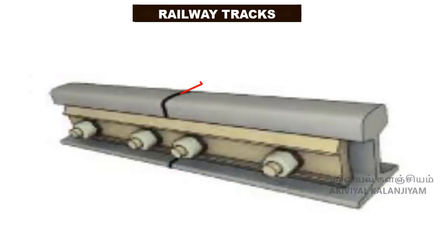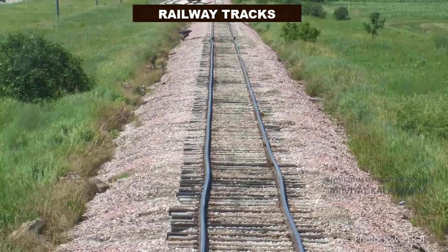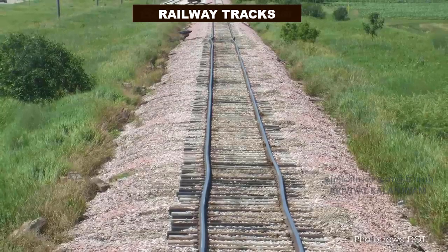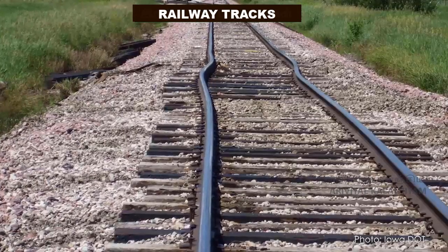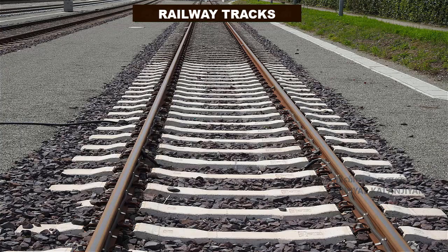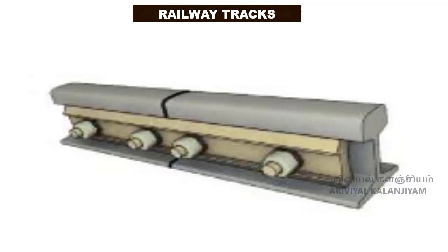Railway tracks. You would have noticed some space being left between railway tracks. This is because railway tracks, which are made of iron, expand during summer. When there is a gap, there will be no damage to the track due to the expansion of the metal. So we can understand that both linear and cubical expansion in solids play a very important role in our daily life.